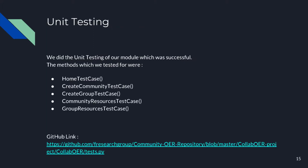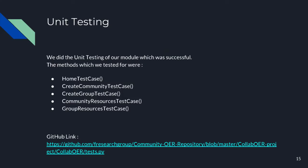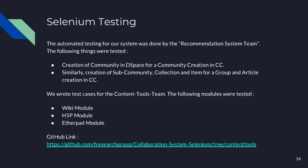Richard will now explain unit testing. Once we had made our intermediate system, DSpaceX, we performed unit testing which was successful for every method tested. Some methods tested were: home test case; create community test case, which verified whether a community created in collaborative community is also successfully created in DSpace along with a sub-community; create group test case, which does similarly for groups; community resources test case, covering articles generated in the collaborative community; and group resources test case. We also performed Selenium testing for the content tools team, and Selenium testing for our web app was done by the recommendation team.